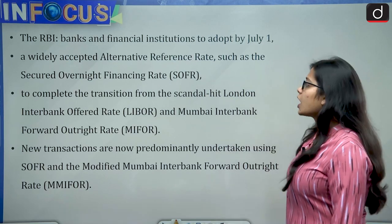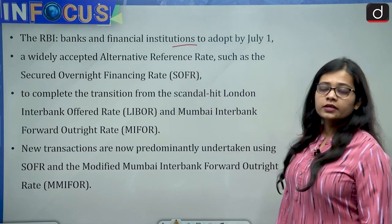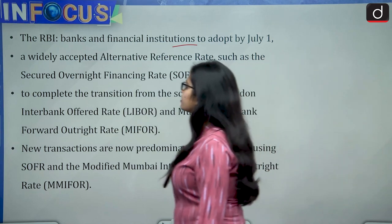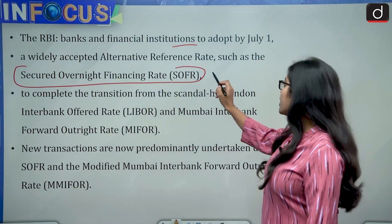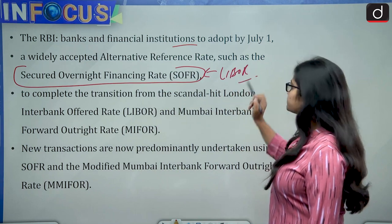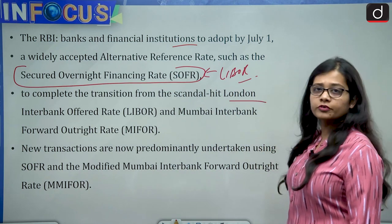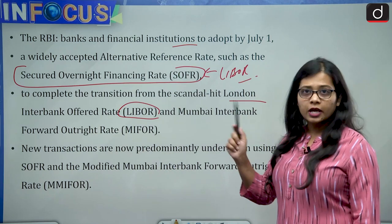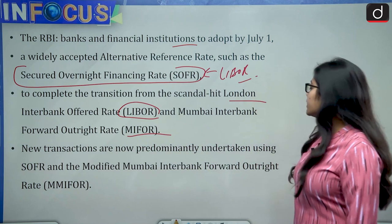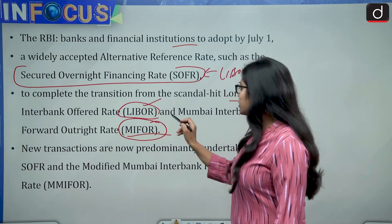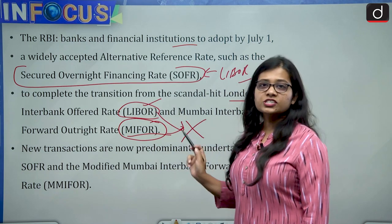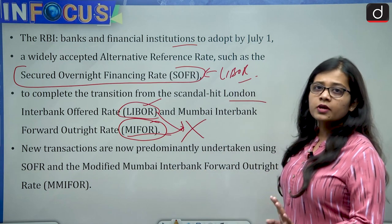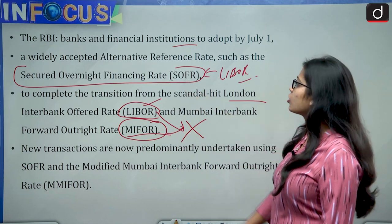The RBI has asked banks and financial institutions to adopt by July 1 a widely accepted alternative reference rate such as the Secured Overnight Financing Rate (SOFR). Banks should shift from LIBOR to SOFR, completing the transition from the scandal-hit London Interbank Offered Rate. The full form of LIBOR is London Interbank Offered Rate, and MIFOR is Mumbai Interbank Forward Outright Rate.